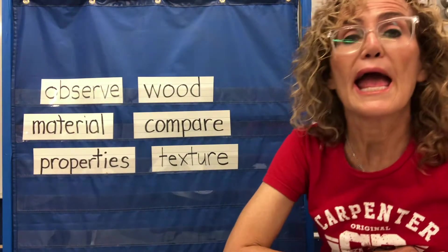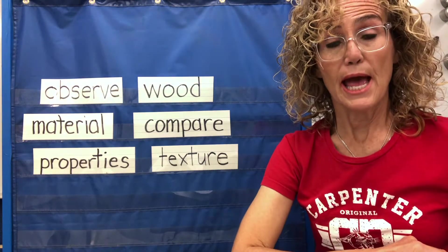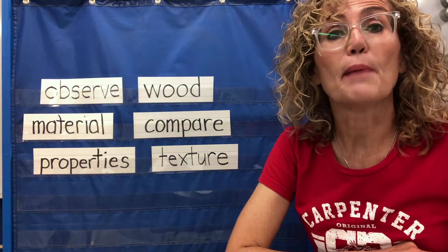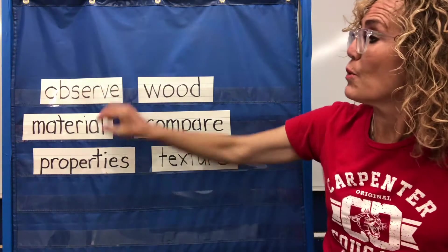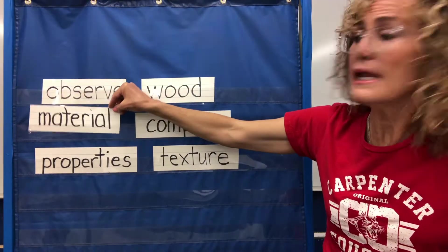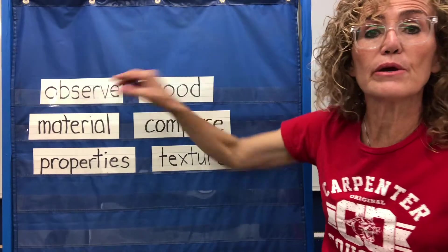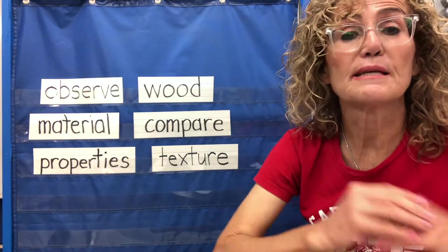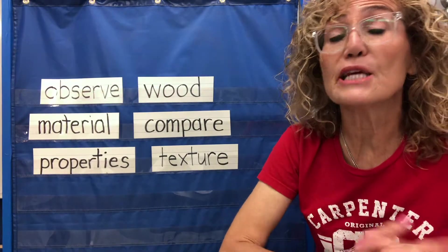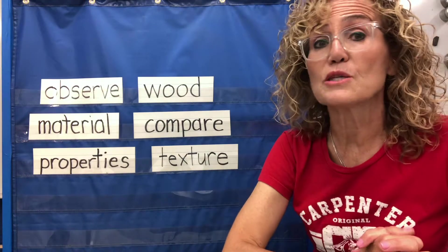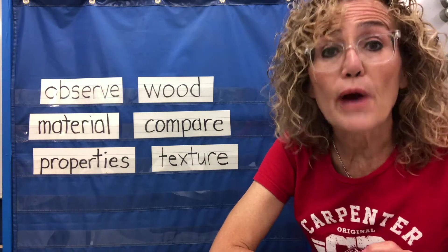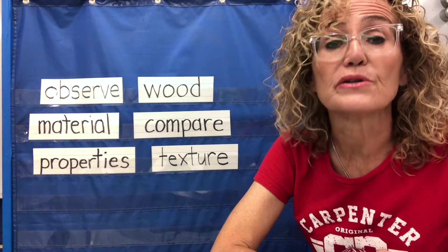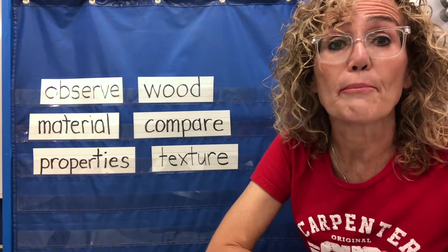Wood. And wood comes from a tree. We learned about all different types of wood. We learned that wood is a material. Wood is a material, and material is one of the things that we're going to really start learning about — how we describe different materials, and what are some of the properties of other materials.